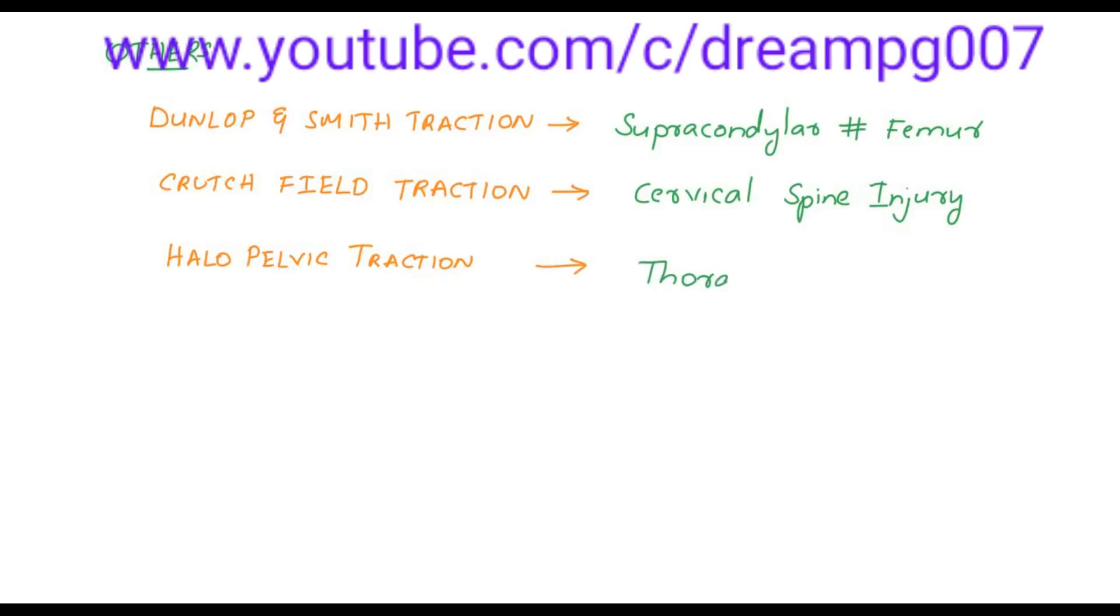Let's have a look into other tractions. Dunlop and Smith traction are used for supracondylar fracture of the femur. Crutchfield traction is used for cervical spine injury. Halopelvic traction is for thoracic and lumbar spine injury. Agnes Hunt well leg traction is for hip deformity.